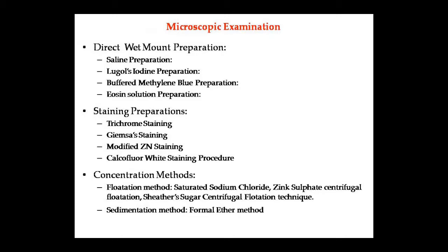For microscopic examination, a fresh sample of stool which is not contaminated with disinfectants is ideal. It is useful to detect the presence of leukocytes (pus cells), red blood cells, muscle fibers, fat globules, crystals, cysts, and yeast cells. Under a high-power microscope, many parasites can be tested: amoebae, flagellates, cercariae, eggs, larvae, and cysts. Results are reported as scanty, few, moderate, or many. Wet mount, saline preparation, or staining can be used.